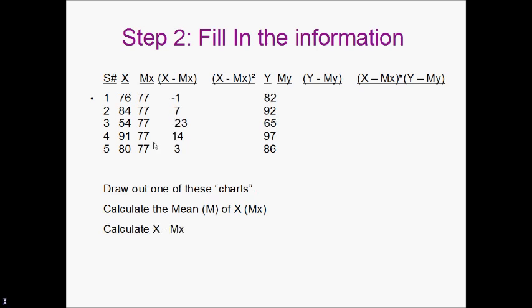The next step is going to be to calculate X minus the mean of X. So we're going to take 76 minus 77 equals negative 1. We're going to go 84 minus 77 equals 7. We're going to go 54 minus 77 equals negative 23. We're going to go 91 minus 77 equals 14. And 80 minus 77 equals 3.